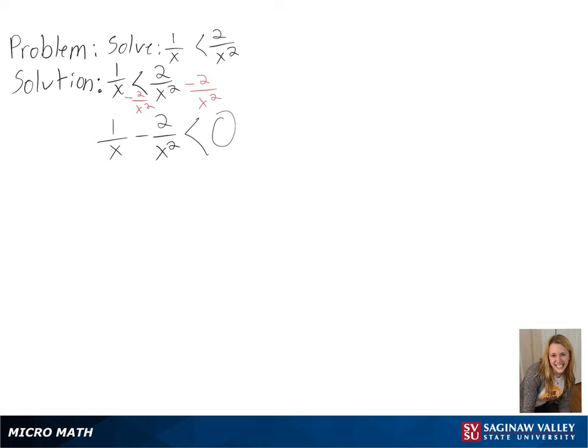Then to get a common denominator, we can multiply 1 over x by x over x and then simplify this to get x minus 2 over x squared is less than 0.